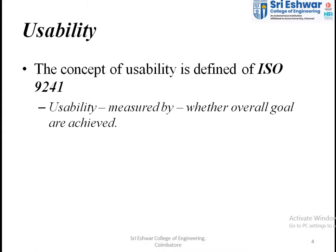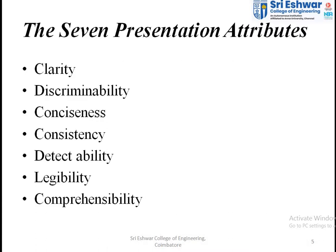Next is usability. The concept of usability is standardly defined in ISO 9241. Usability measures whether overall goals are achieved. There are seven presentation attributes you need to follow while designing a user interface: clarity, discriminability, conciseness, consistency, detectability, legibility, and comprehensibility.